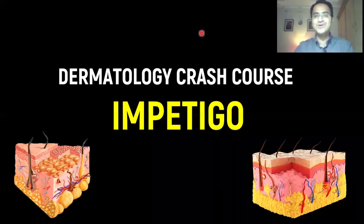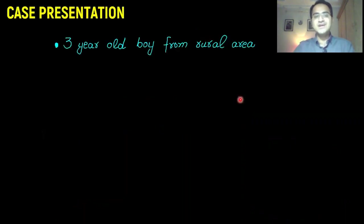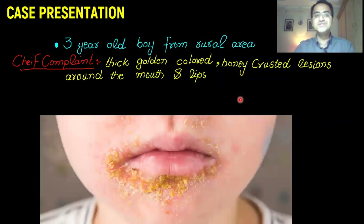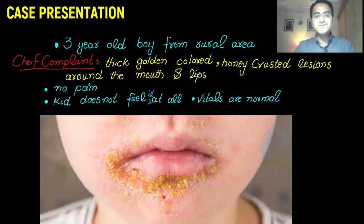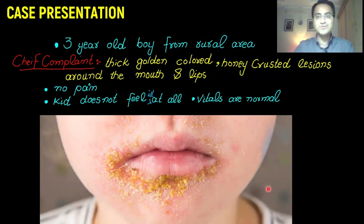In our dermatology crash course video series, we'll be talking about impetigo. We have a case here: a three-year-old boy from a rural area presents to your clinic with thick golden-colored honey-crusted lesions around the mouth and lips. The patient feels no pain and does not feel ill at all. Vitals are normal. This patient was diagnosed as a case of impetigo.